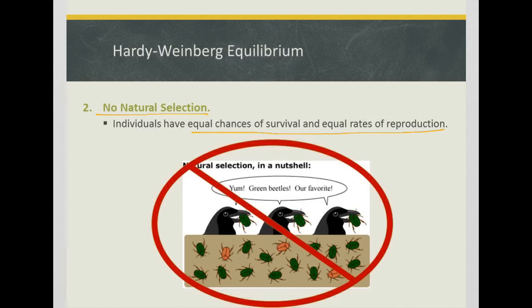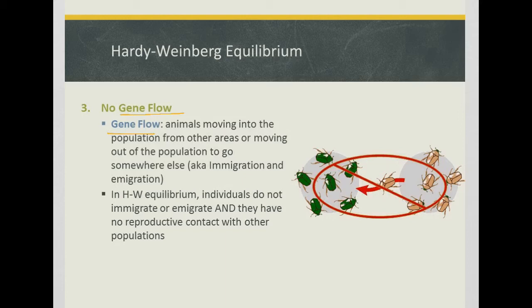The third condition is no gene flow. Gene flow is where organisms either move into the population from other areas or leave the population to go somewhere else. If you have a certain subset of genes and then you move, your genes are no longer in the gene pool of that population. So no immigration or emigration can happen. This shows one of our pale beetles moving to a different population — that cannot happen. Individuals cannot immigrate or emigrate, and they can have no reproductive contact with other populations not being considered in the calculation.